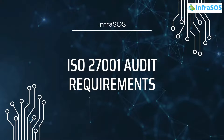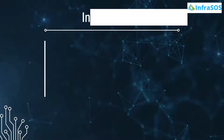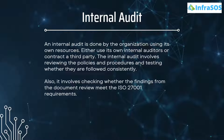Let's also discuss the ISO 27001 audit requirements. Audits are necessary to ensure the ISMS meets the set criteria. These audits involve competent auditors reviewing whether the ISMS and its elements meet the standard's requirements. They also check whether the controls and policies are practical and efficient and can help maintain the organization's security posture. There are two different types of audits: the internal audit and the external audit. An internal audit is done by the organization using its own resources.